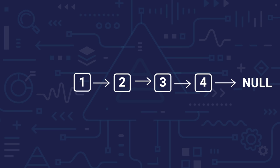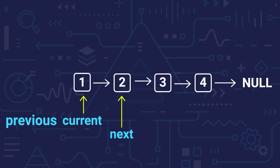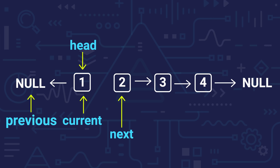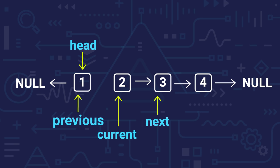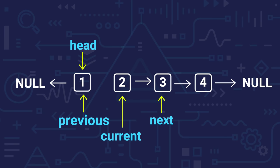We need 3 pointers: previous, current, and next. Current is pointing to the head, and previous is pointing to null. Our next will point to current's next. What will happen: we will change the next link and make it point to previous. Previous starts at null because node 1, which is the last node in the reversed list, must point to null. After doing this, we increase the 3 pointers by one step. So previous comes to 1, current comes to 2, and next comes to 3.